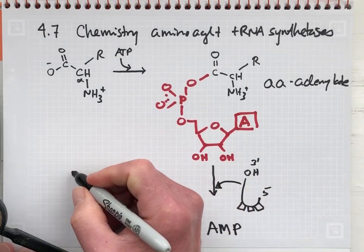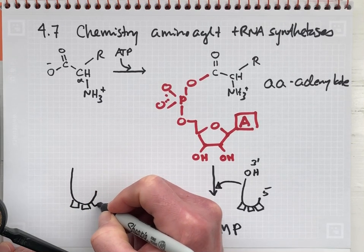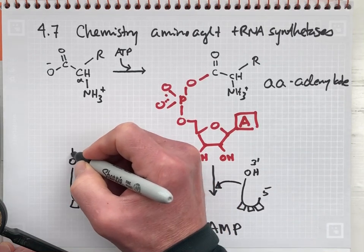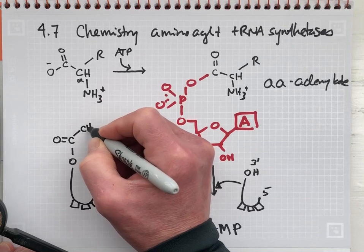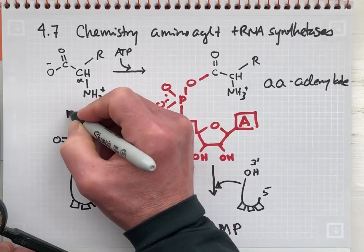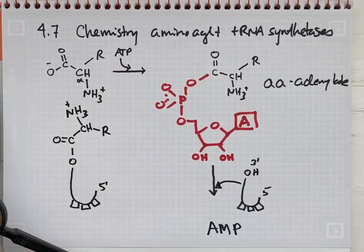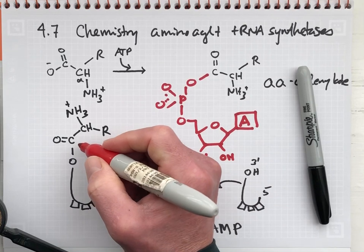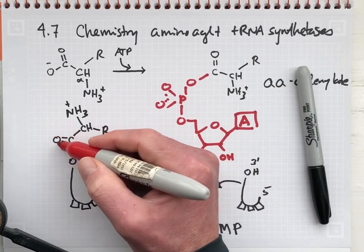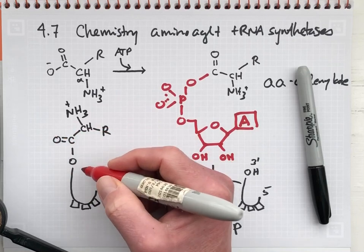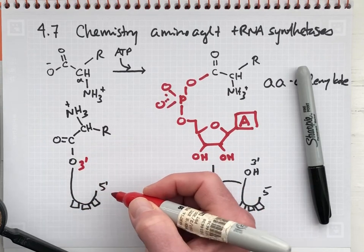And we create the aminoacyl tRNA. And we see here that there's now an acyl linkage between what used to be the carboxylic acid functional group of the amino acid and the alcohol functional group, the three prime end of the tRNA.